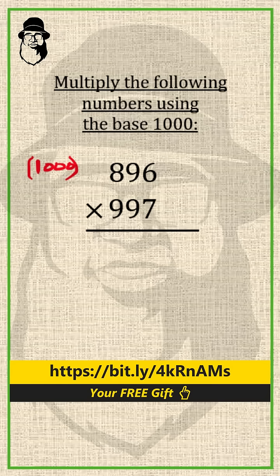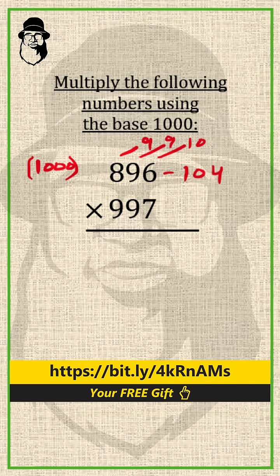So how far is 896 from 1000? We do all from 9 and the last from 10 here. 8 from 9 is 1, and 9 from 9 is 0, and 6 from 10 is 4. So 896 is 104 far from 1000.